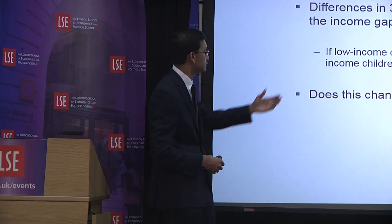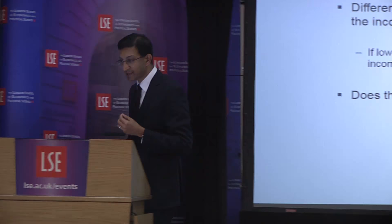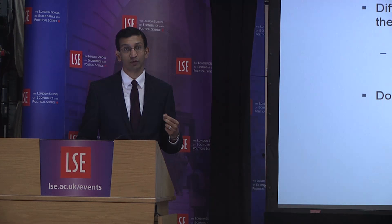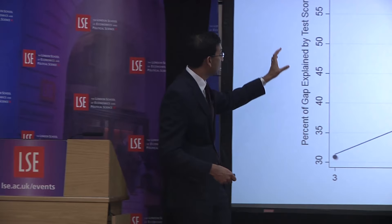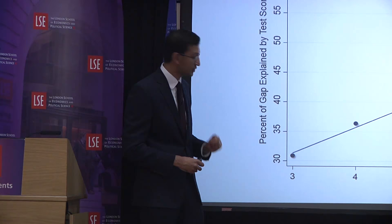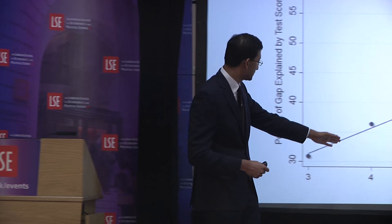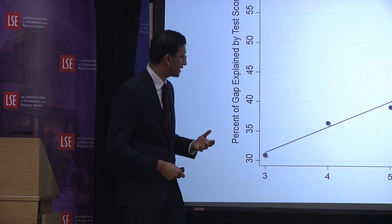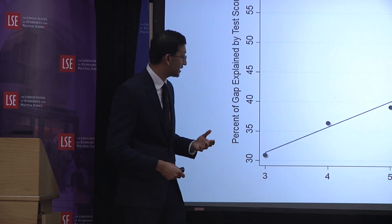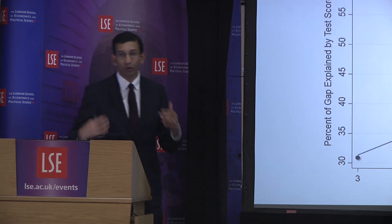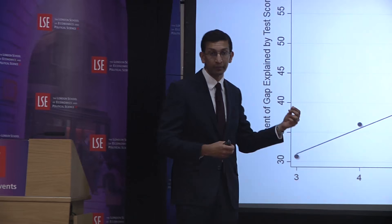We reach that conclusion by a re-weighting exercise: asking what would the rates of innovation of kids from low-income families look like if they had exactly the same test scores as kids from high-income families? The answer is it would close about 30% of the gap. Now, if we use test scores in later grades instead of third grade, we explain more and more of the gap — from 31% in third grade, to around 36-37% in fourth grade, to about 40% by fifth grade.